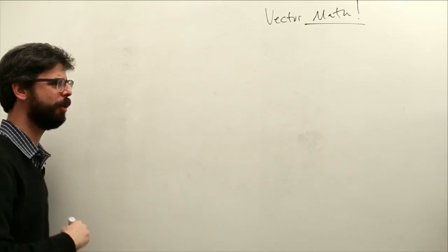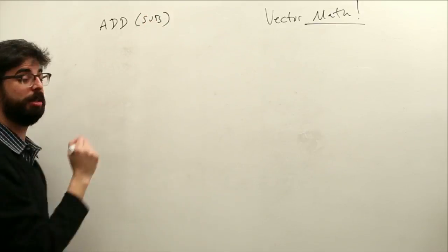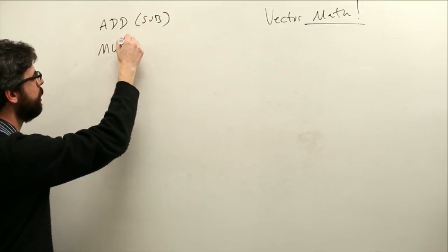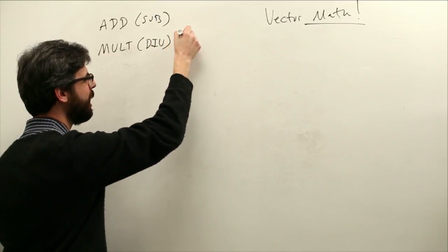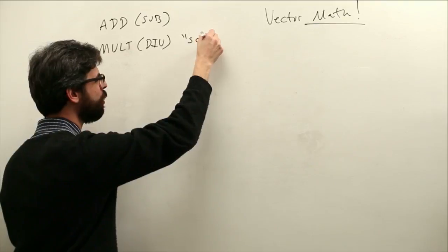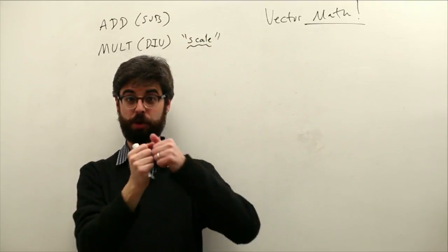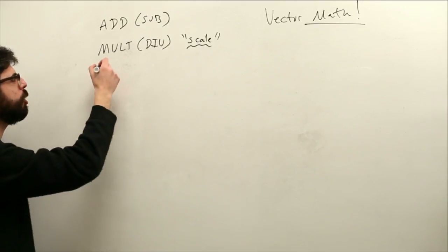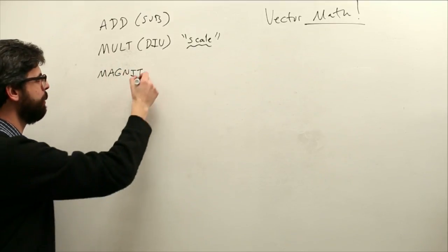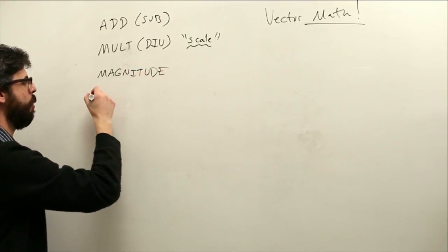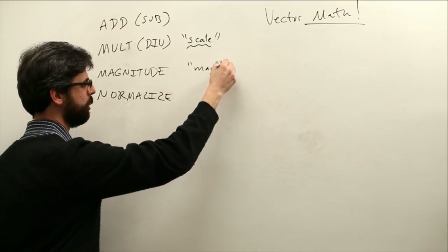I do want to take the time before we get back into the physics stuff to look at four basic things. Let's make a list of those things. We're going to look at add, which comes with subtraction. We're going to look at multiply, which comes with division. Let's think of this with the word scale. Multiplying, what I really mean is scaling a vector, growing it, shrinking it. I want to look at magnitude and normalize.